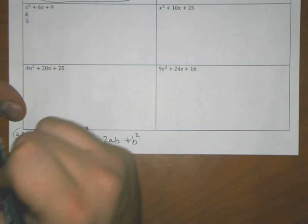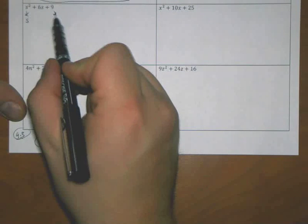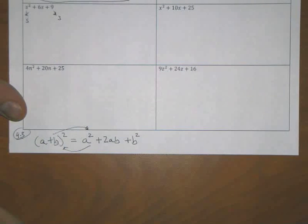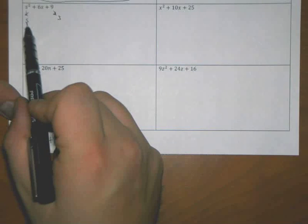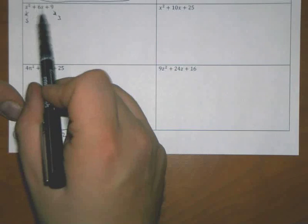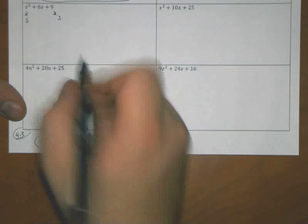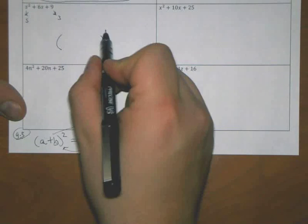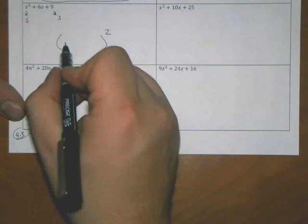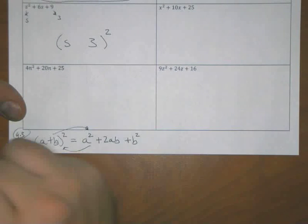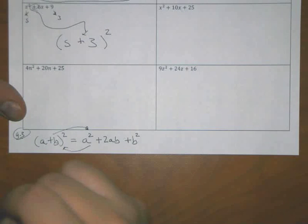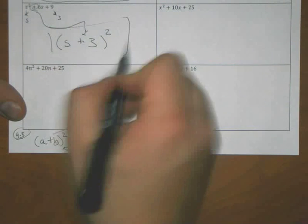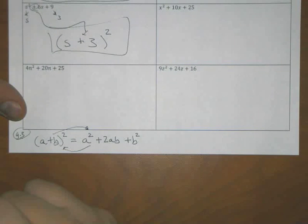So I look at my first example and I see, oh, I see this is certainly a perfect square. s times s is s². Nine jumps off the page of me as a perfect square. Three times three is nine. And I check, is three times s then times two, the middle term. Well, three times s is three s times two is in fact six s. Therefore, according to our pattern, this trinomial factors very quickly to s, three, the middle term tells us what goes in the middle. s plus three squared.